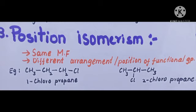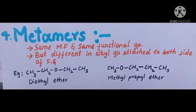Positional isomerism involves compounds having the same molecular formula but different position of the functional group. For example, 1-chloropropane and 2-chloropropane — here the position of the functional group is dissimilar.